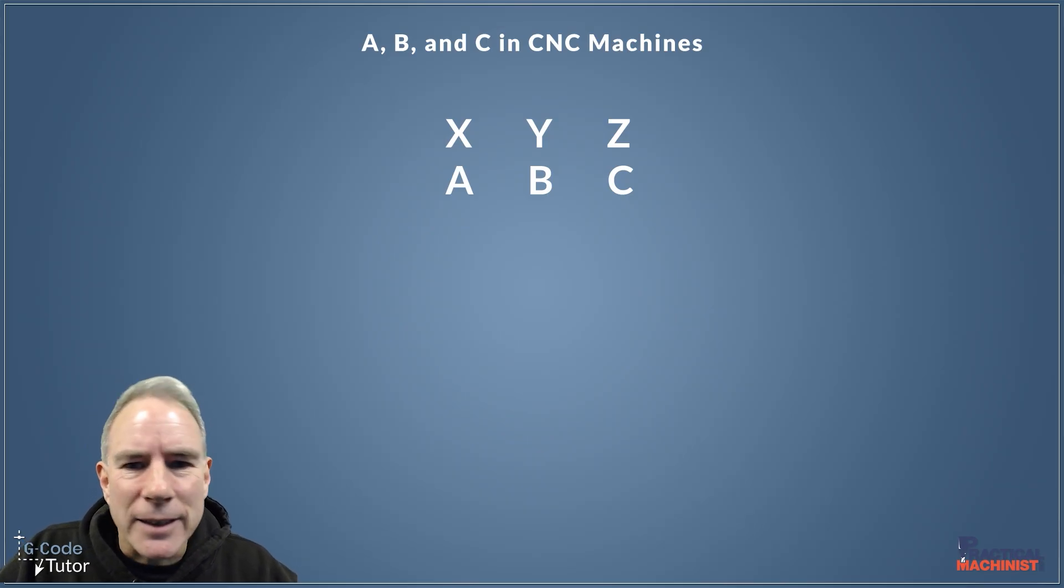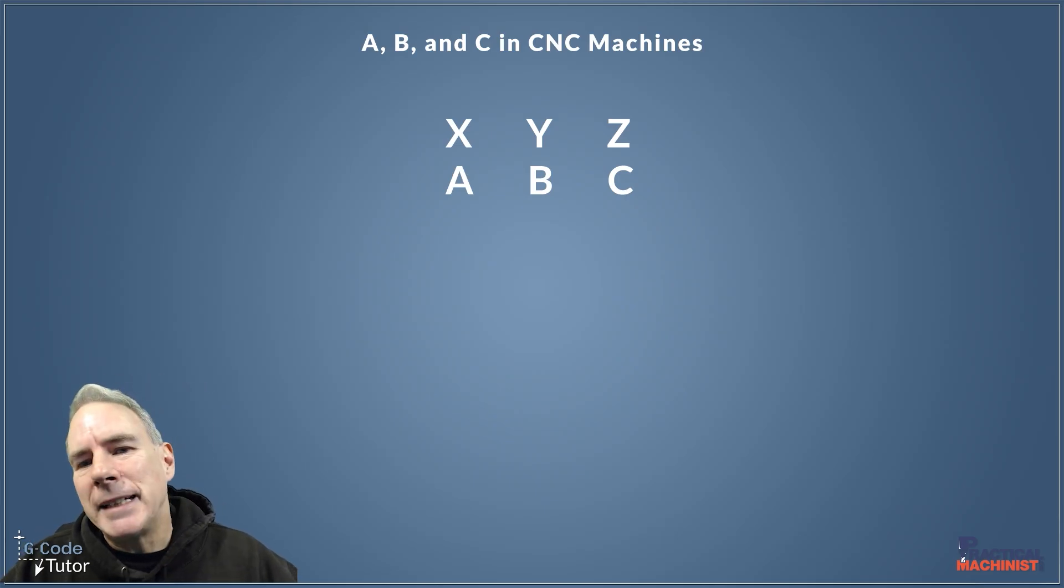Okay, so let's move on to our next ones. So our next ones are A, B, and C in relationship to X, Y, and Z there. So what are these axes used for? Well, A, B, and C, generally, on a milling machine especially, they are rotational axes.